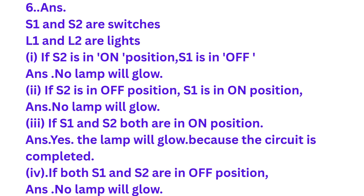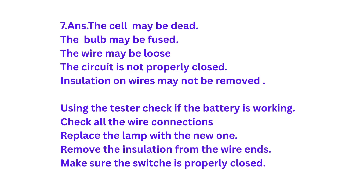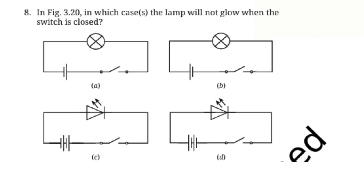If both S1 and S2 are in off position, no lamp will glow. Question number seven: You have made the circuit shown in figure 3.1. Even after closing the circuit the lamp does not glow. What can be the possible reasons? The cell may be dead, the bulb may be fused, the wire may be loose, the circuit is not properly closed, or insulation on the wires may not be removed. To fix: check if the battery is working using a tester, check all wire connections, replace the lamp with a new one, remove insulation from wire ends, and make sure the switch is properly closed.